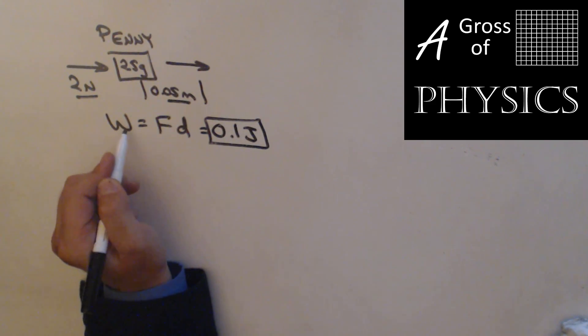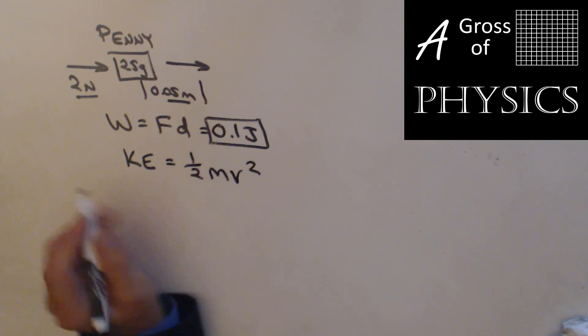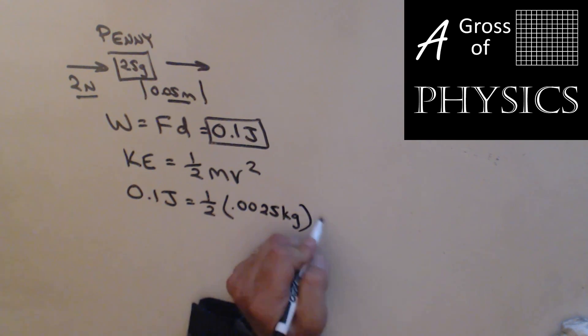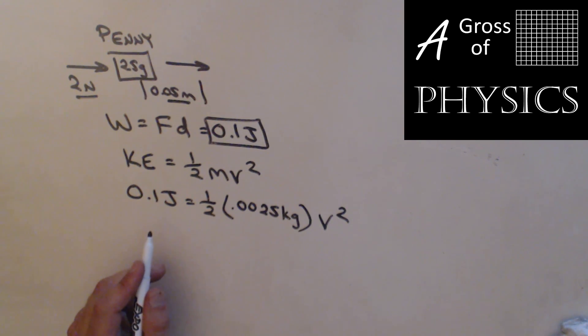All of that work will go into turning the penny into kinetic energy, so causing it to move. So kinetic energy is 1.5 mv squared, 0.1 joules equals 1.5, now 2.5 grams is 0.0025 kilograms, it's three places to the left, v squared. So 0.1 divided by 0.5 divided by 0.0025, take the square root, and I will flick that penny so that it gains a speed of 8.9 meters per second. Quite fast.